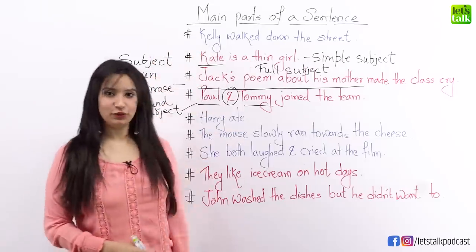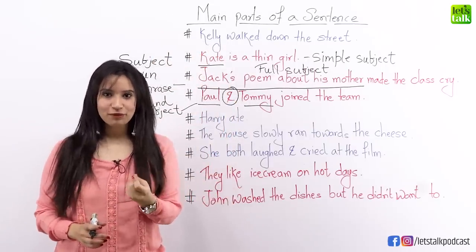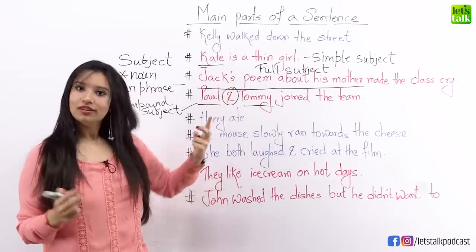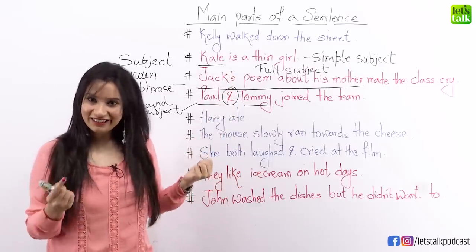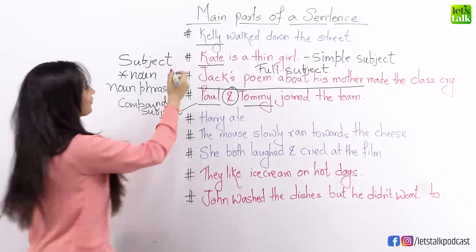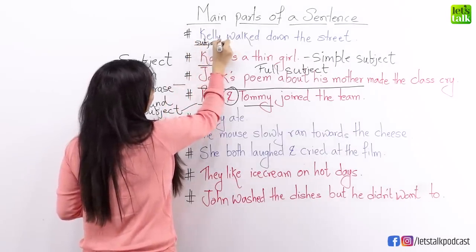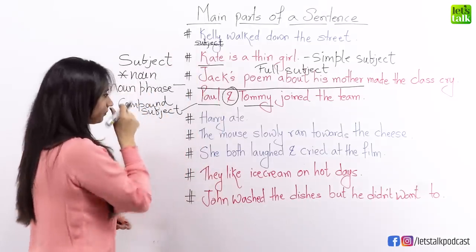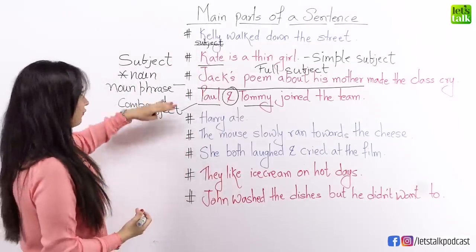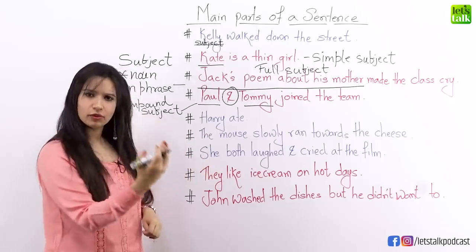Now here's a sentence for you — why don't you find the subject yourself? The first step is to ask the 'who' question. Kelly walked down the street. Who walked down the street? Kelly walked down the street. So definitely Kelly is the subject. Now let's look at the next important part of a sentence. We've already looked at the noun — now let's look at: Harry ate. Which one is the noun? Harry.